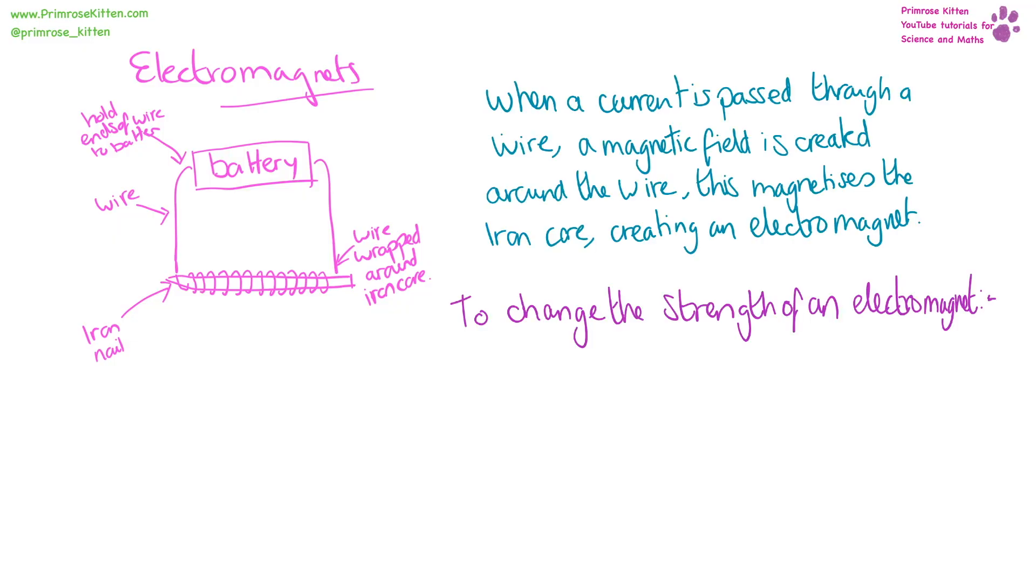If you want to change the strength of an electromagnet, you can do two things. You can change the current, or you can change the number of turns, or the number of coils, that the wire is wrapped around the iron core.